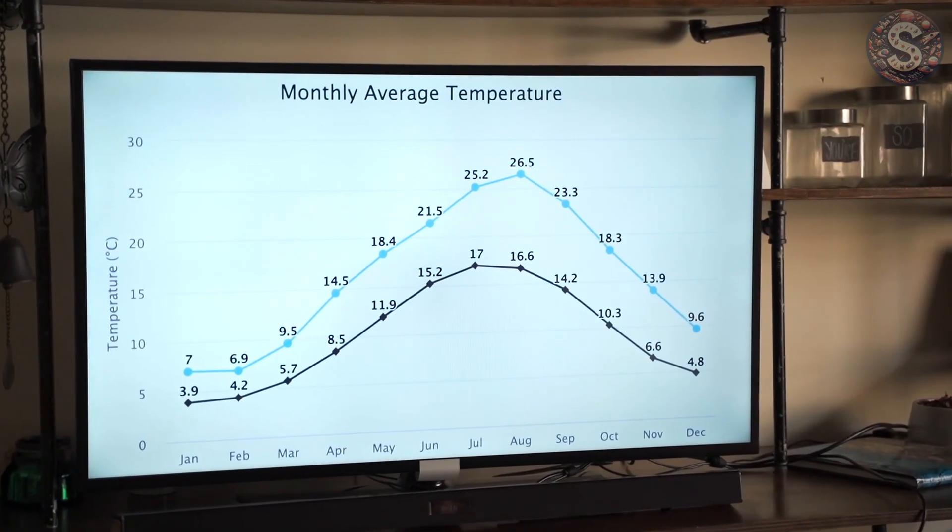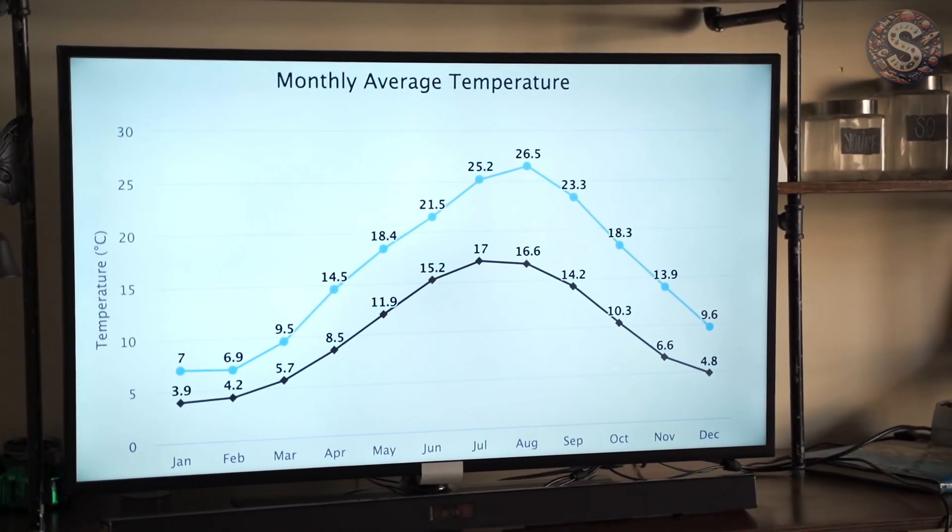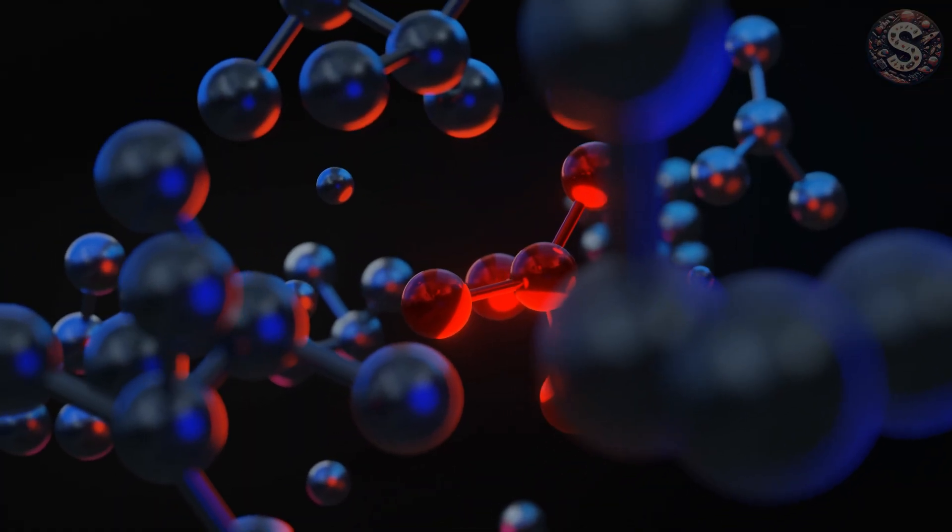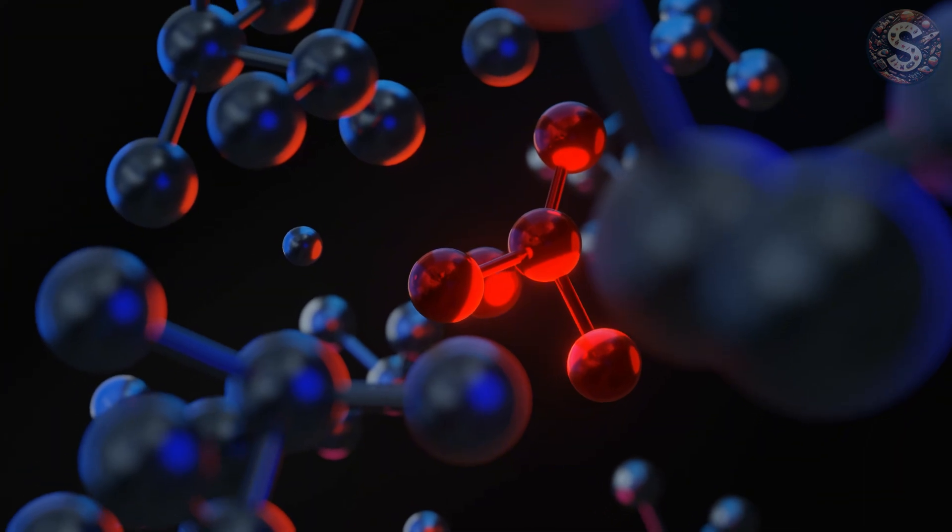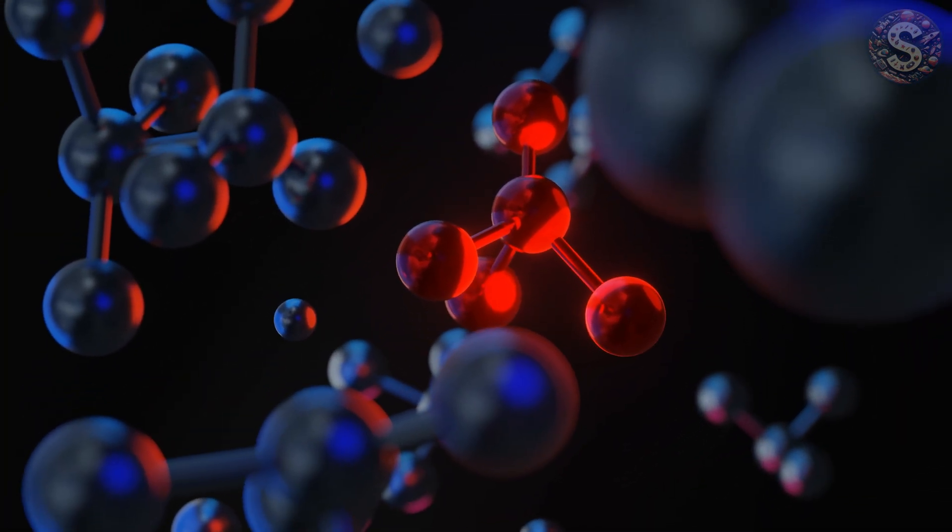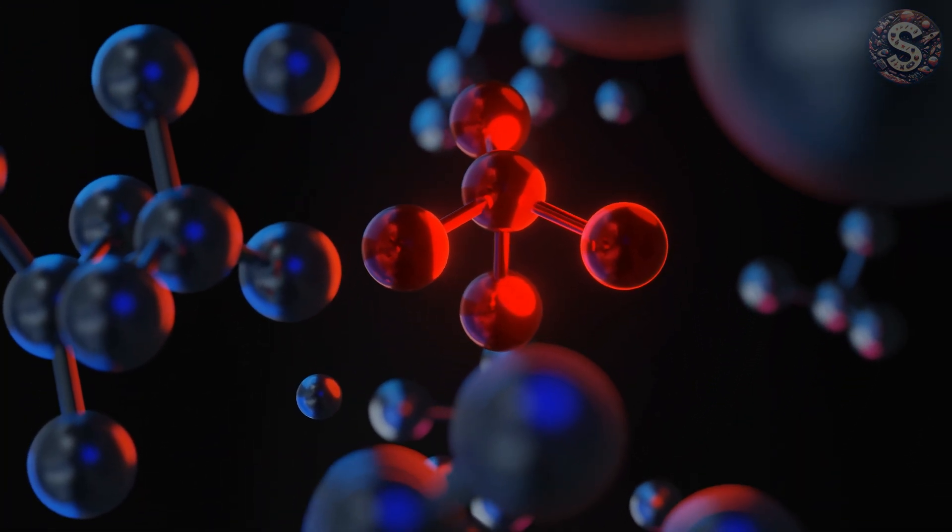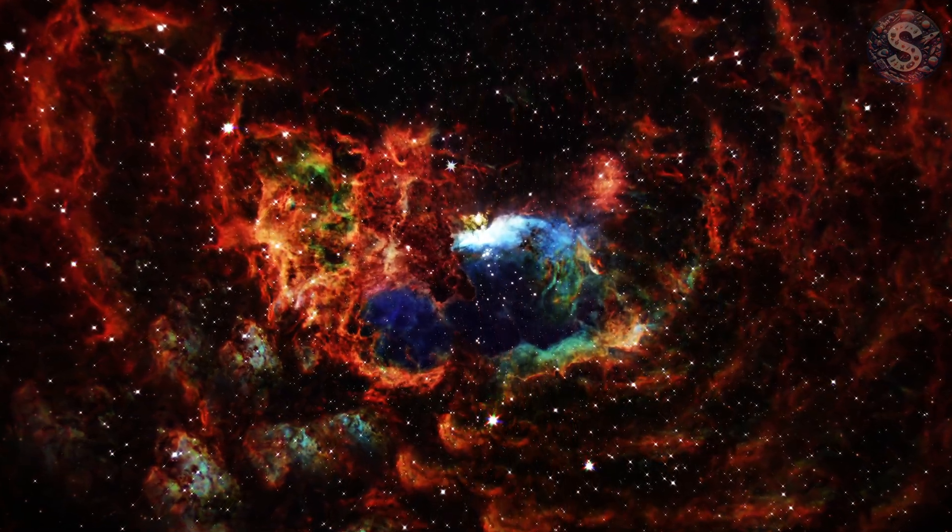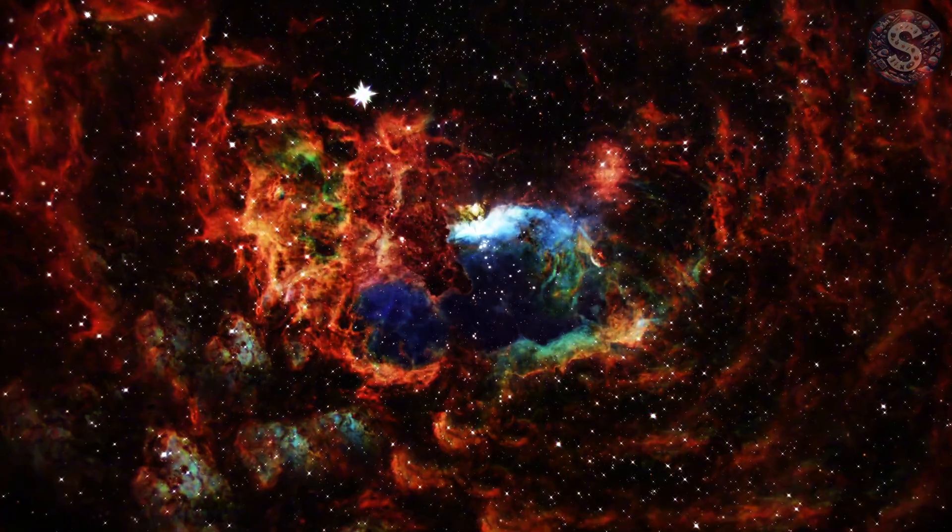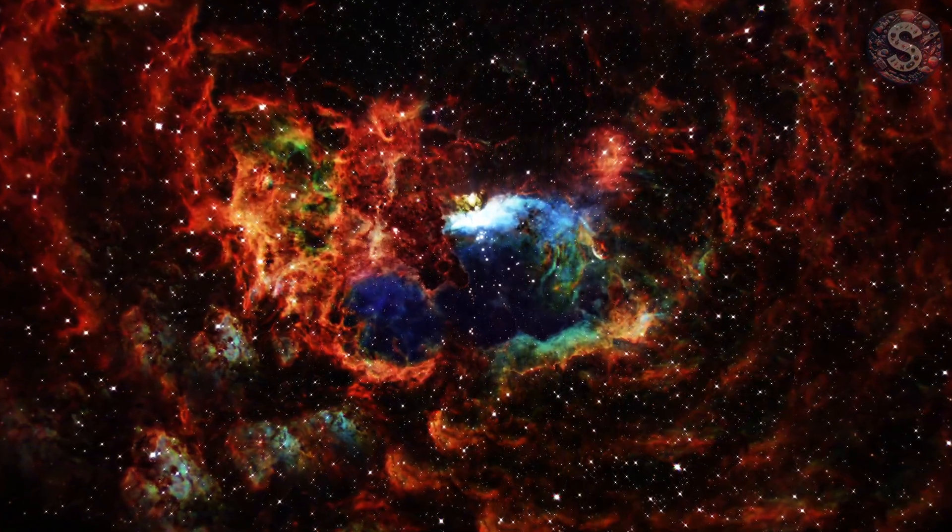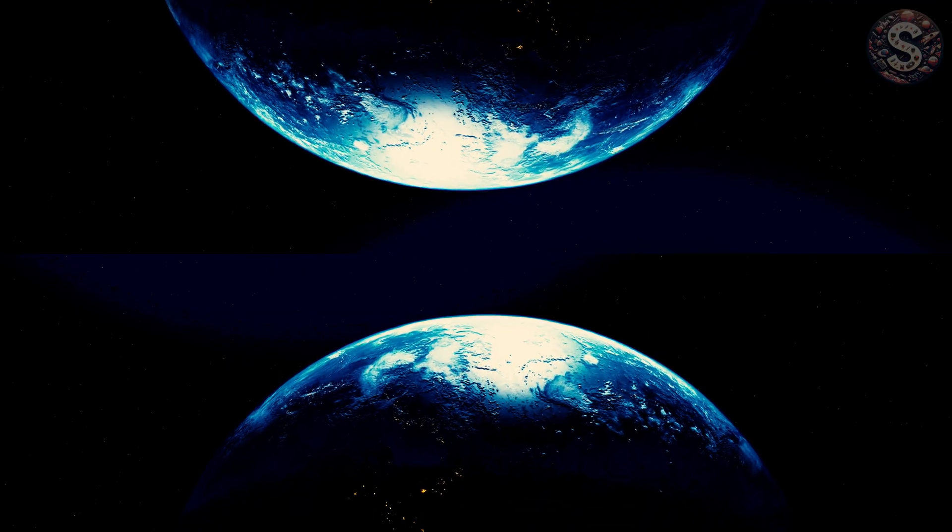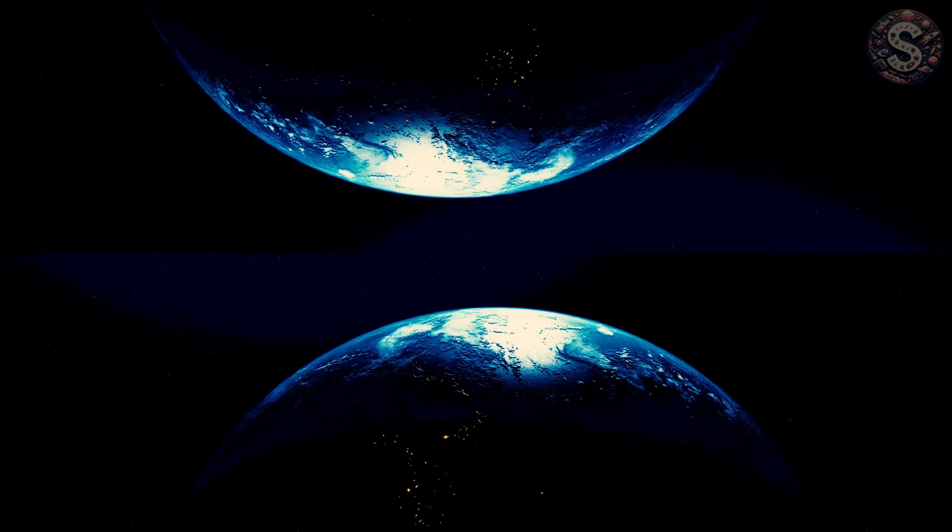Some physicists even argue that time emerges the way temperature does. Temperature isn't a property of a single particle. It only exists when you look at trillions of them together. Maybe time is like that, not something baked into the foundations of the universe, but something that shows up when matter and energy are arranged in the right way. If that's true, then time could in principle vanish under extreme conditions, which leads to an unsettling question: What would the end of time actually look like?